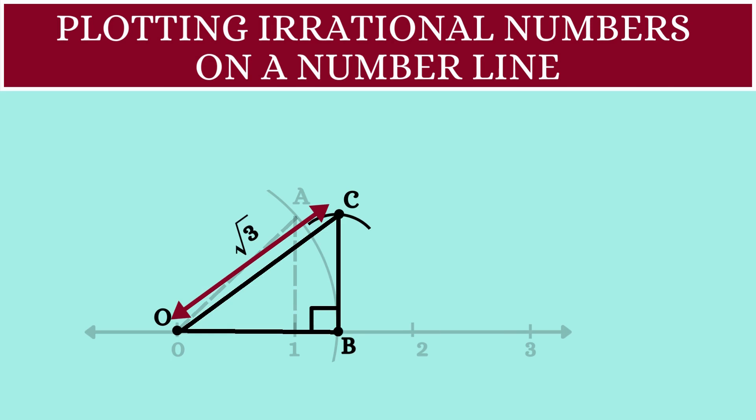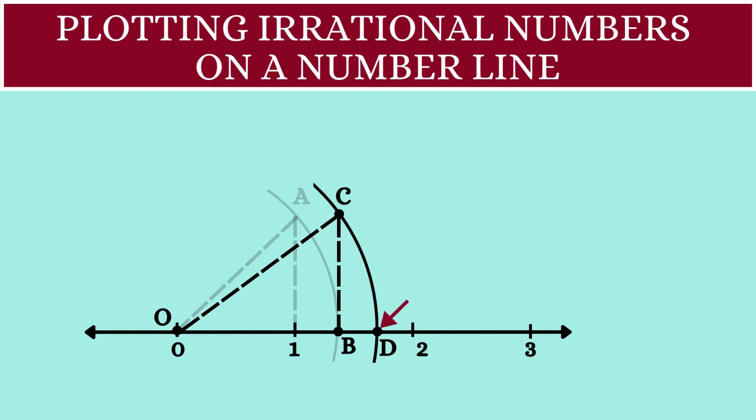But, we have to plot this on our number line. So, we'll keep the center at O and the radius as OC and draw an arc such that it cuts the number line at point D. The length OD now is same as the length OC. Both are square root of 3.